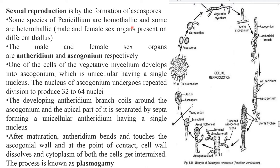Some species of Penicillium are homothalic and some are heterothalic. Homothalic means both male and female sex organs are present in the same thallus, whereas heterothalic means male and female sex organs are present on different thalli. The male and female sex organs are antheridium and ascogonium respectively. One cell of the vegetative mycelium develops into ascogonium, which is unicellular having a single nucleus. The nucleus of the ascogonium undergoes repeated division to produce 32 to 64 nuclei.